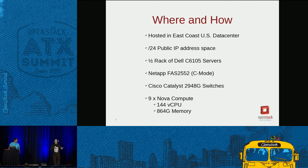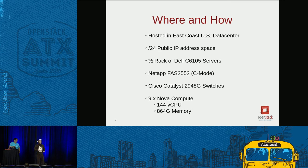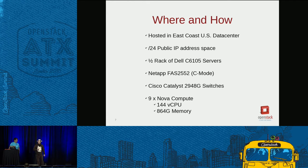Let's look at what TryStack looks like from the infrastructure level today. It's in an East Coast US data center. We currently have a slash-24 public IP address pool for Neutron floating IP addresses. We're currently on a half rack of Dell servers donated by Dell, and we're going to be upgrading all this soon. We also have a NetApp FAS array C-mode cluster that's used for Manila development — a lot of the upstream Manila dev work is being done on TryStack.